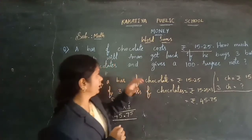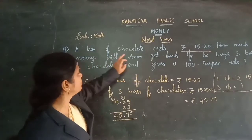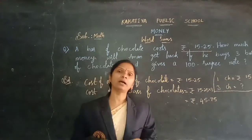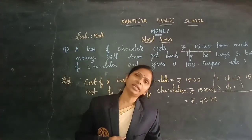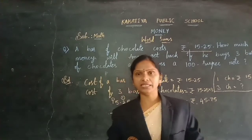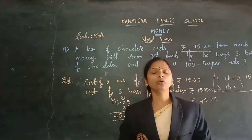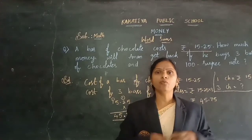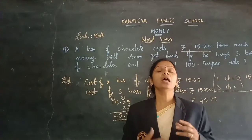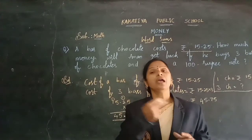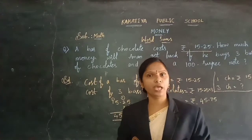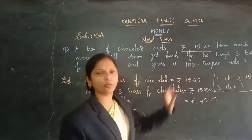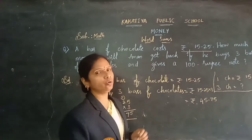The cost of 3 chocolates is 45 rupees 75 paise. But here what they are asking — how much money will Amal get back? The back amount we need to find out. As I said in previous videos, when you are finding the back amount, you need to subtract the cost of the things from the given amount to the shopkeeper. The given amount to the shopkeeper is a 100 rupee note.